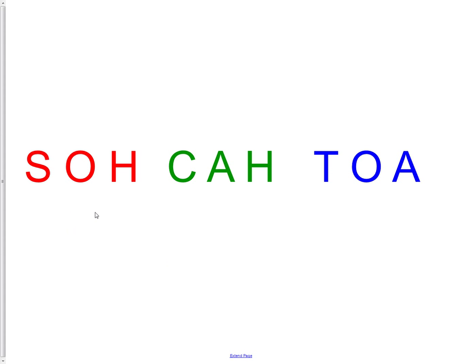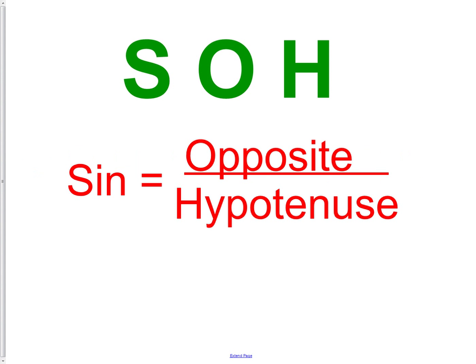Now let's talk about each of them individually. The SOH part stands for sine is equal to opposite over hypotenuse. When we're talking about these, we're always talking about a ratio, a comparison of two sides of a triangle. We're comparing the ratio of the opposite side to the hypotenuse side of a right triangle. We'll talk a little bit more about what we mean by opposite if you don't remember.